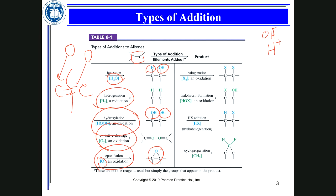Chapter 8 introduces many new terms and is a fundamental chapter for reactions of organic compounds. You need to learn how to study a chemical reaction based on: what is the reactant, what is the reagent, what is the product, what is the mechanism, and if there are minor and major products, which is which and why.